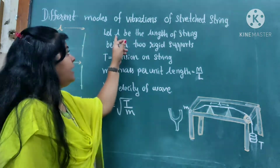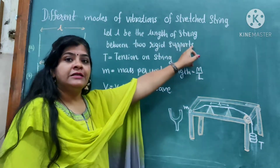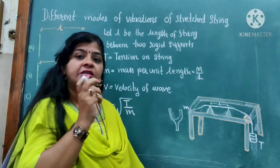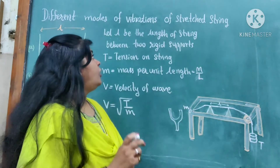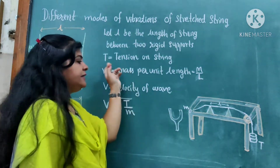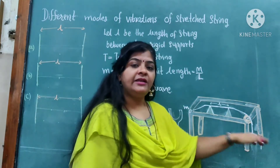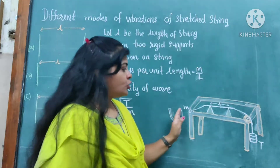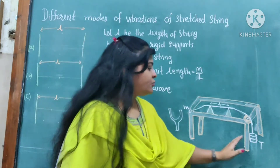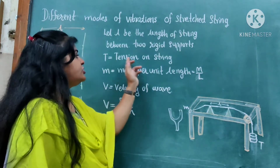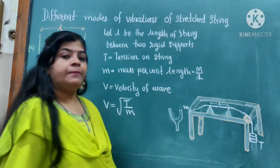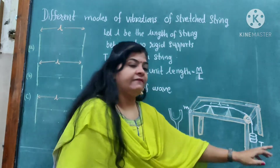Small l represents the length of the string between the two rigid supports. So these two rigid supports, the knife edges, are there. Between these two knife edges, that length we call as the vibrating length. Capital T means whatever the weight we attach at the end of this string — because of this weight the string is stretched, and whatever the weight is there, that is called as the tension on the string. This tension is measured by mass into acceleration due to gravity, m into g, which gives the T value.